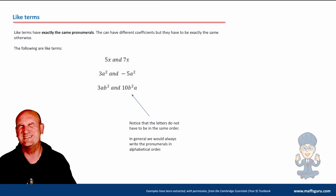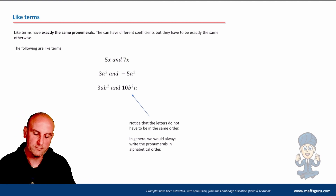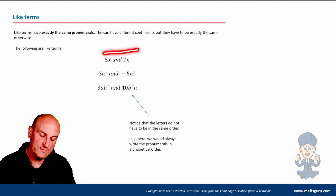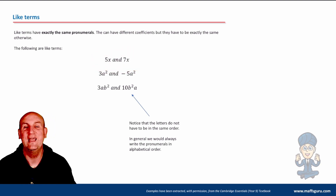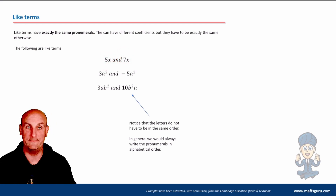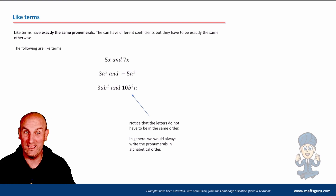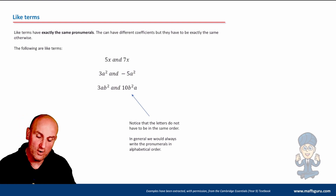In this situation you'll notice I've got 5x and 7x — they are the same. If you think of x as xylophones, I've got five xylophones and seven xylophones — they're the same thing. What about 3a² and minus 5a²? Well, they are the same because of the a squared.